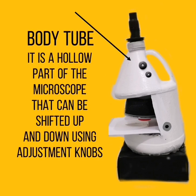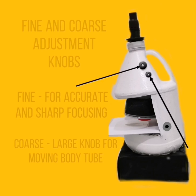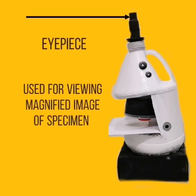Body tube — it is a hollow part of the microscope and it can be shifted up and down using adjustment knobs. Fine adjustment knob — for accurate and sharp focusing. Coarse adjustment knob — large knob for moving the body tube.